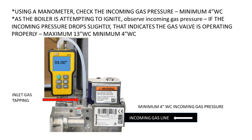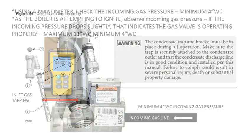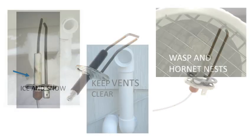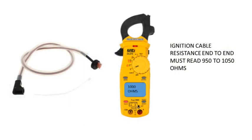Maximum 13-inch water column, minimum 4-inch water column. Is the condensate trap free flowing? Disassemble the condensate trap, clean and reassemble. Is the igniter worn or warped? Visually inspect the igniter. Is the exhaust or intake blocked in any way? Is the ignition cable resistance correct? It must read 1000 ohms plus or minus 50.